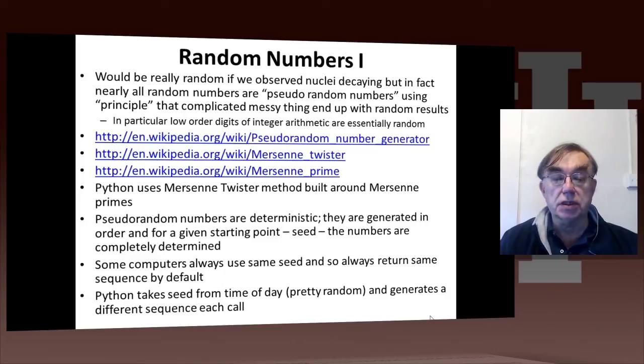Some computer systems, not really computers, let me run times, actually always use the same seed. So when you call them, you always get the same sequence by default. However, Python takes actually a more sensible assumption. It actually takes the seed from the time of day. That's actually a reasonably normal thing to do. I used to do that whenever it was 40 years ago when I started writing codes that use random numbers. And it's also pretty random.